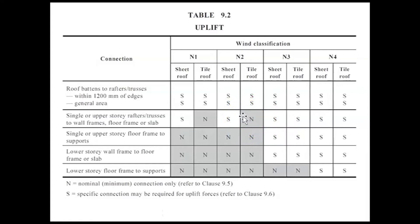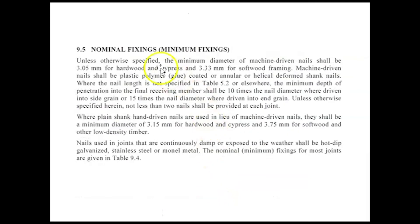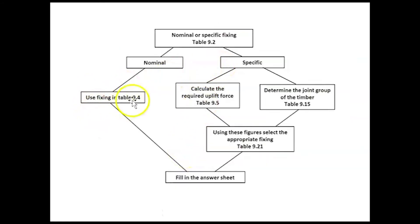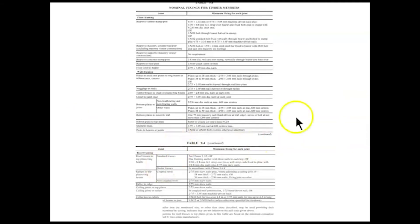And a nominal fixing just basically means the minimum fixings that you would want in anything. This is basically saying there's not enough wind load on a tile roof in an N2 area to warrant specifying a stronger fixing. And that's what a specific connection is—something that needs extra strength in order to resist a calculated force. But tile roof in an N2 area, nominal fixing only. And if you notice down here, N—nominal fixing, minimum requirement, connection only, referred to Clause 9.5. So let's go to Clause 9.5. There's a bit of information in there to read, but I'm going to skip straight down to the last sentence. Nominal fixing requirements for most joints are given in Table 9.4, which is that table in my flowchart. So let's go to Table 9.4. Here it is.